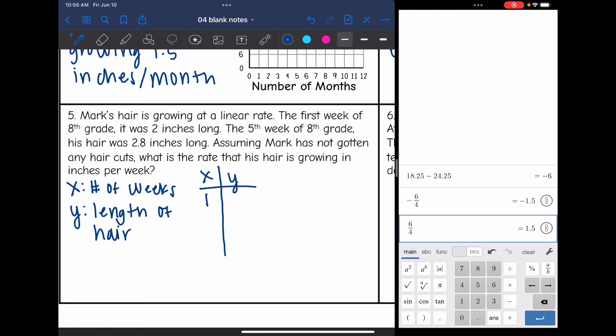Now I can make a table with the information that I was given. So it says the first week of eighth grade, his hair was two inches long. And then the fifth week of eighth grade, it was 2.8 inches long. And then it says, what is the rate that his hair was growing in inches per week? So now I have two ordered pairs and I can label them x1, y1, x2, y2 and plug into slope formula. So it'll be 2.8 minus 2 all over 5 minus 1. 2.8 minus 2 is 0.8 and 5 minus 1 is 4. Now I just need to simplify that. So his hair was growing at a rate of 0.2 inches per week.